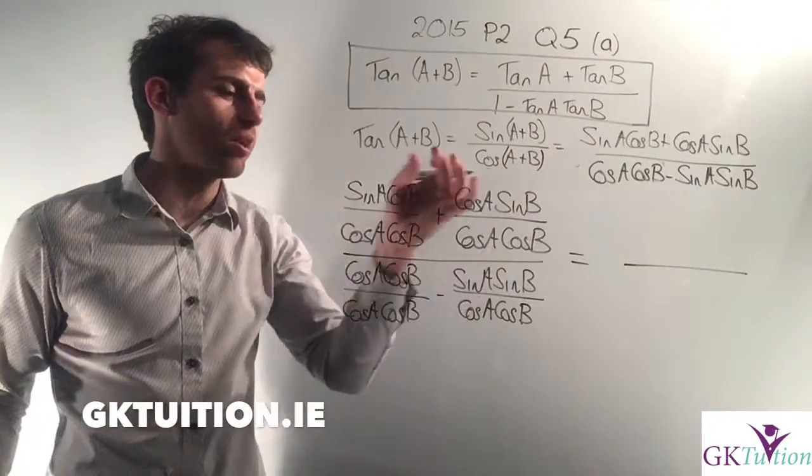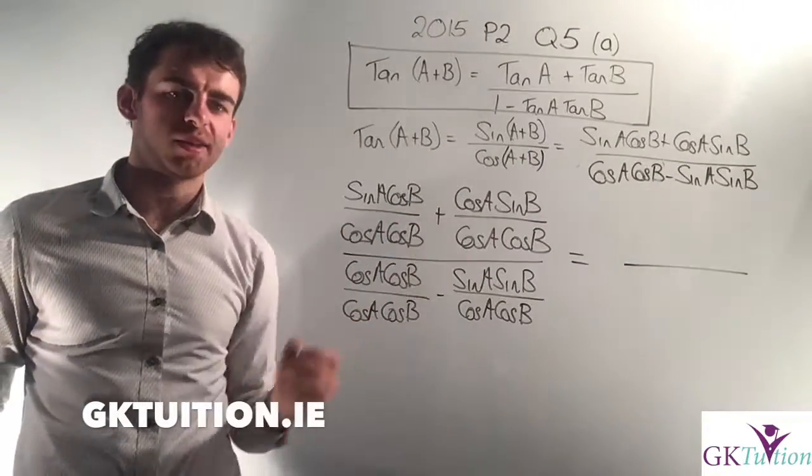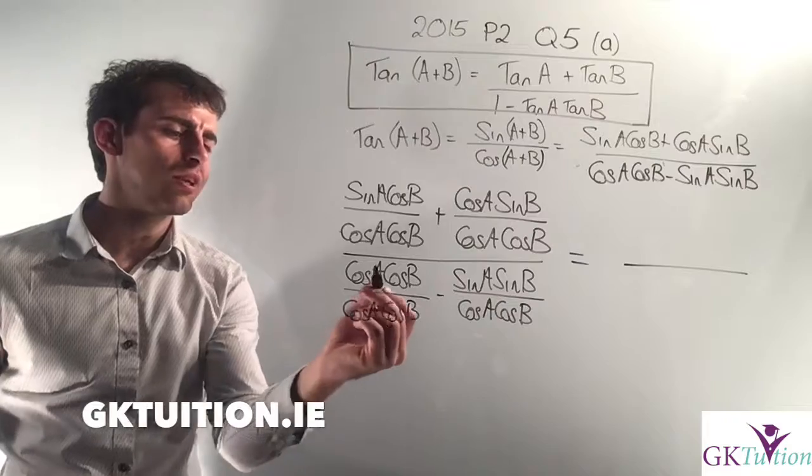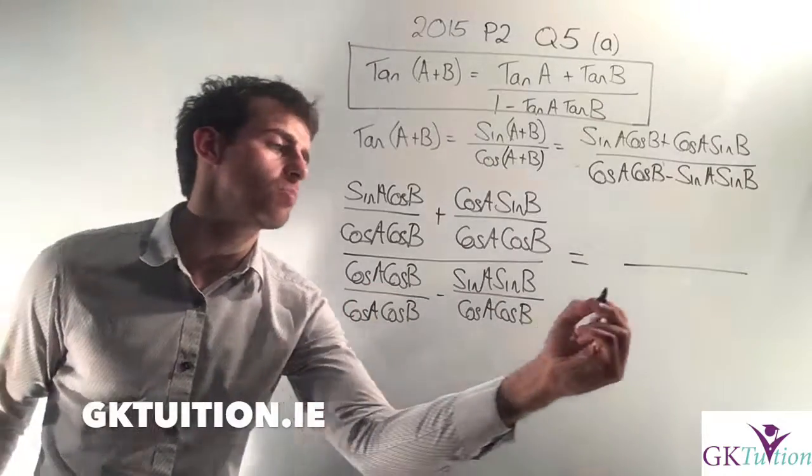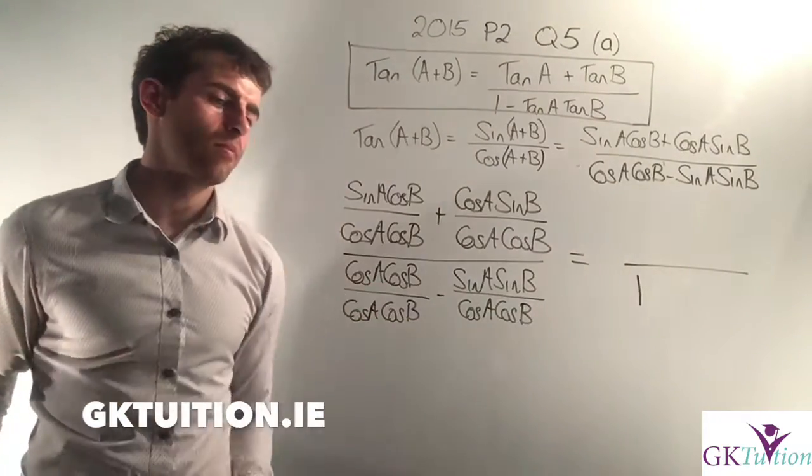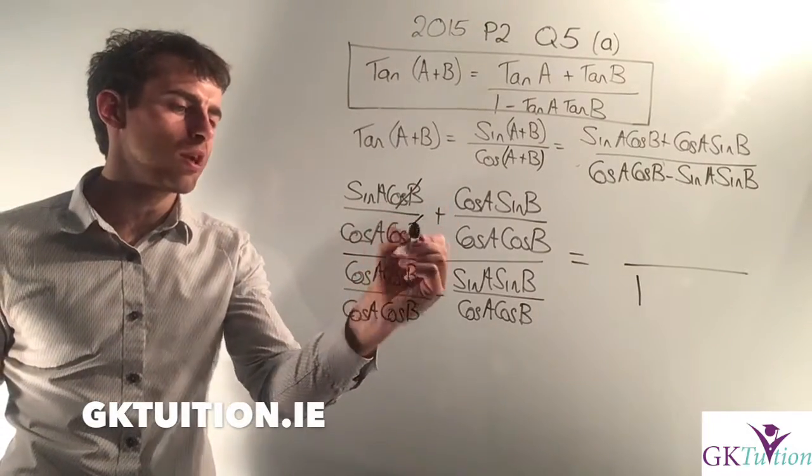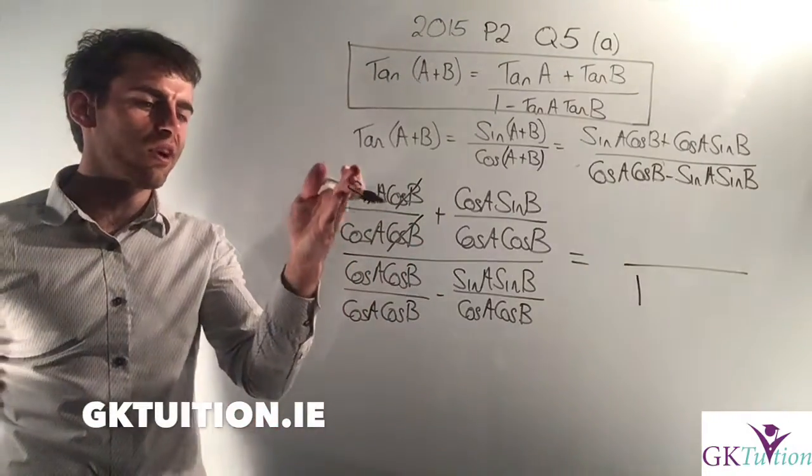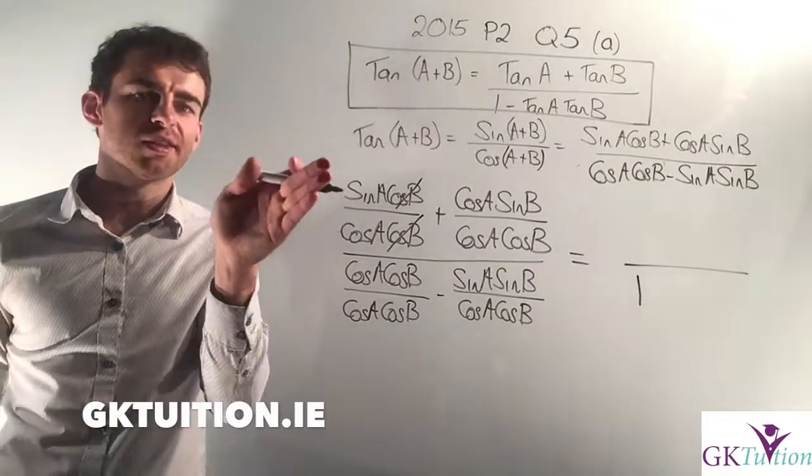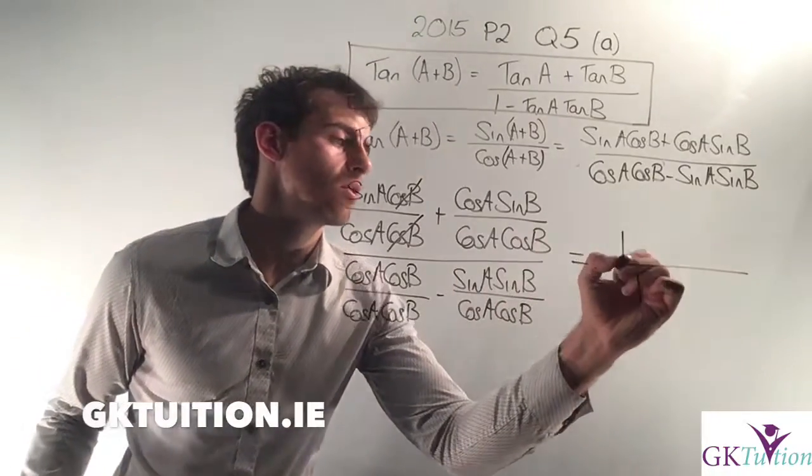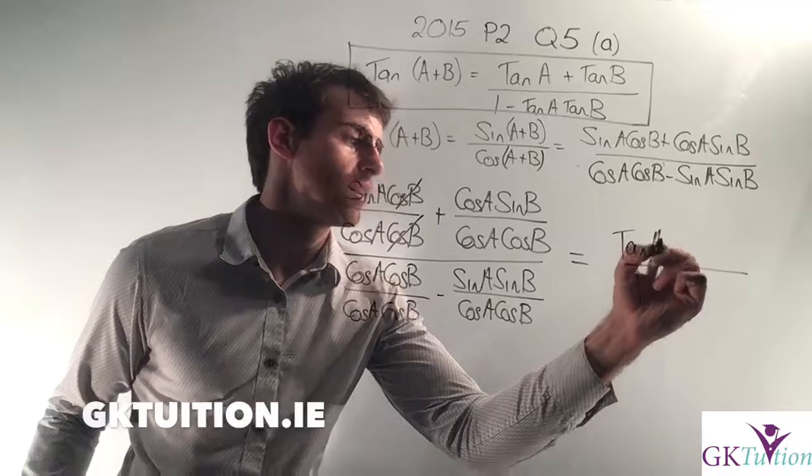Clearly cos A cos B divided by cos A cos B, that's just going to be a one. If I take my first one on the top here, I have a cos B on the top and a cos B on the bottom, and I'm left with sine A over cos A. The sine A over cos A, if you look at page 13 in your log tables, that's tan A.